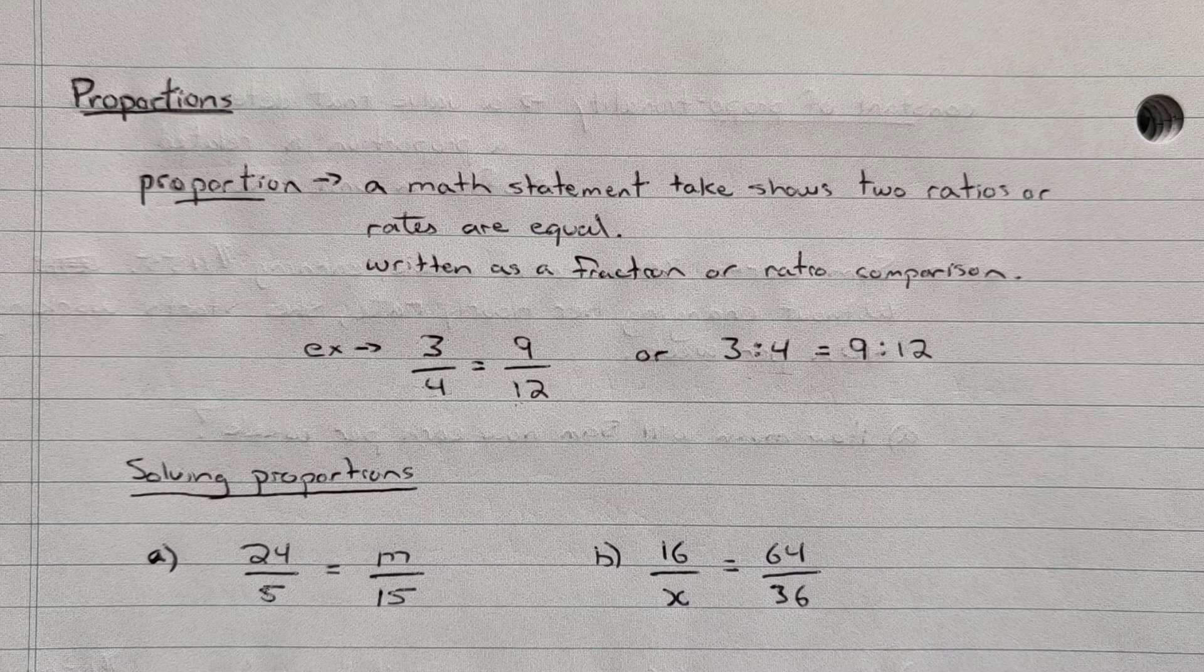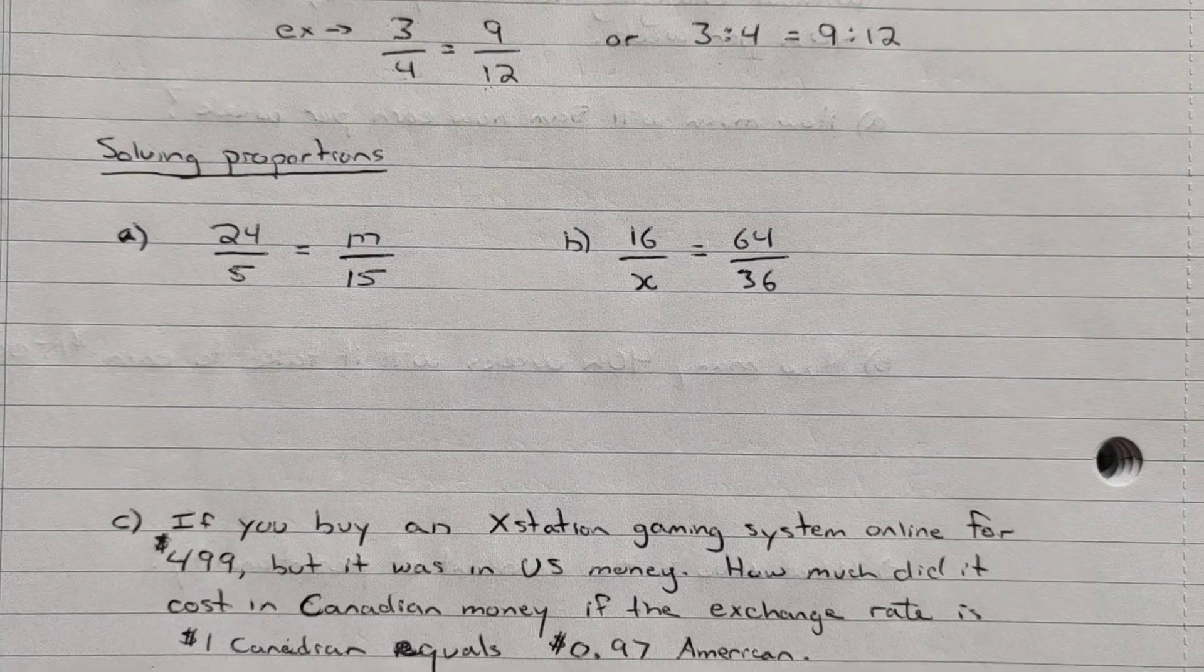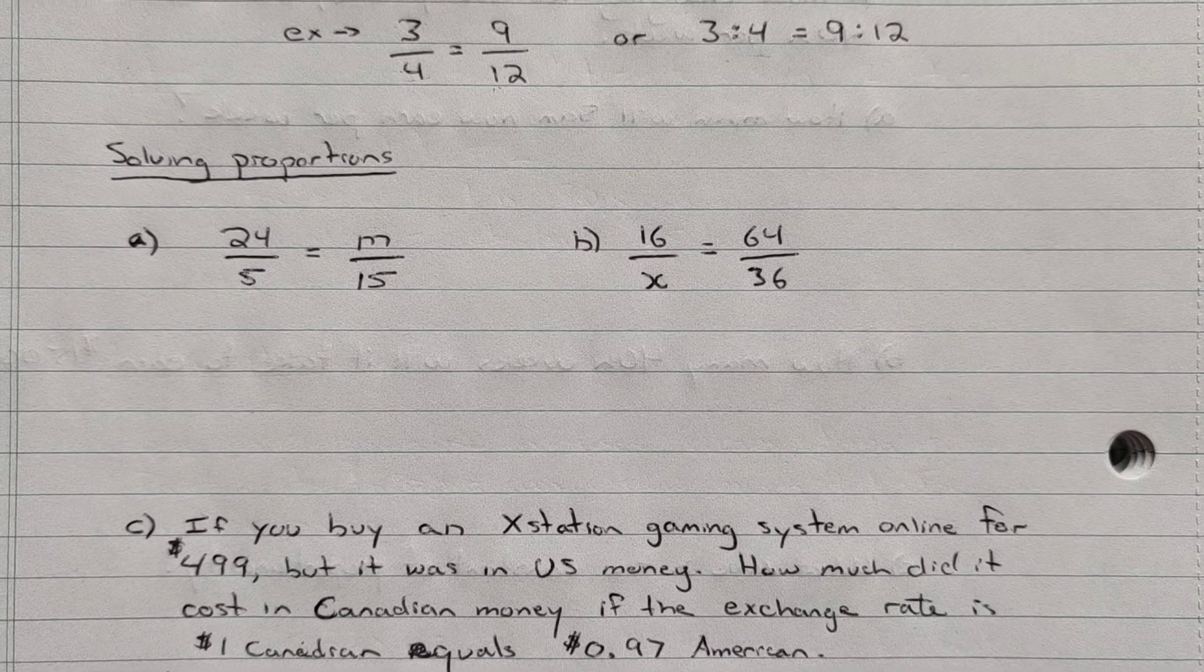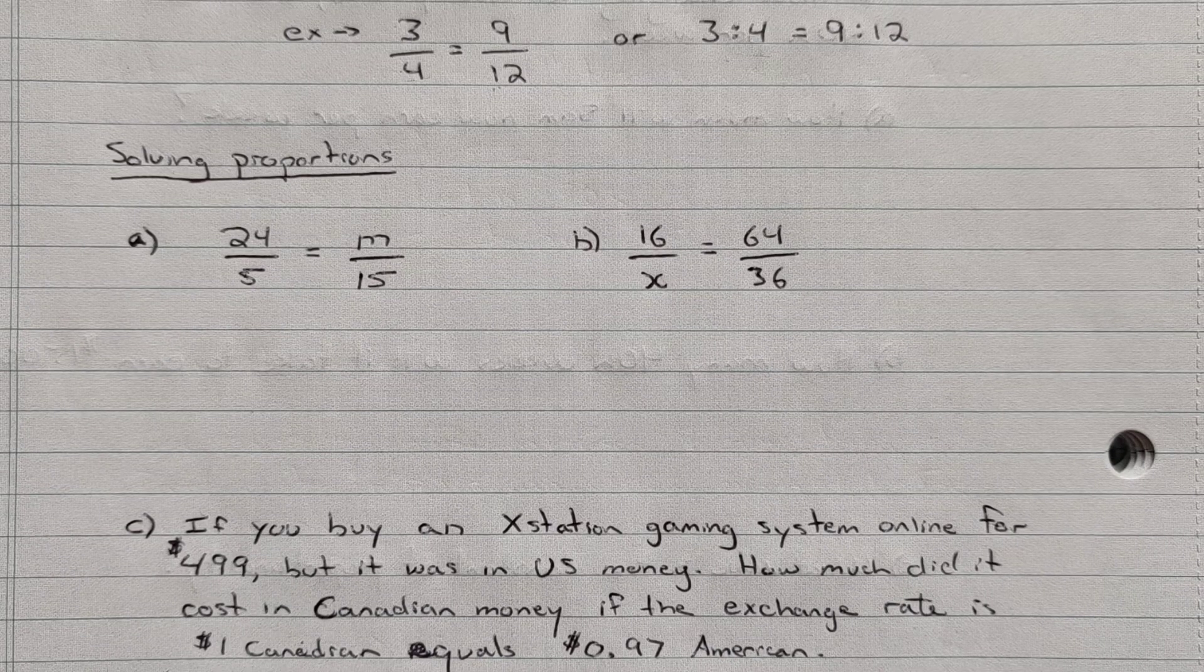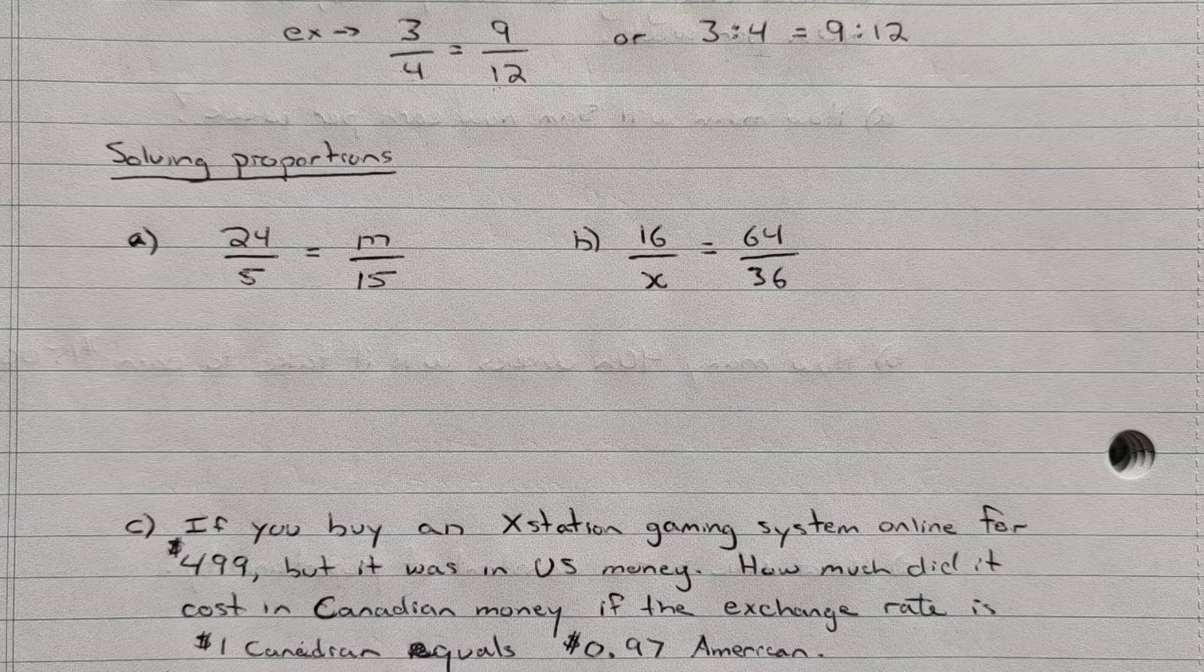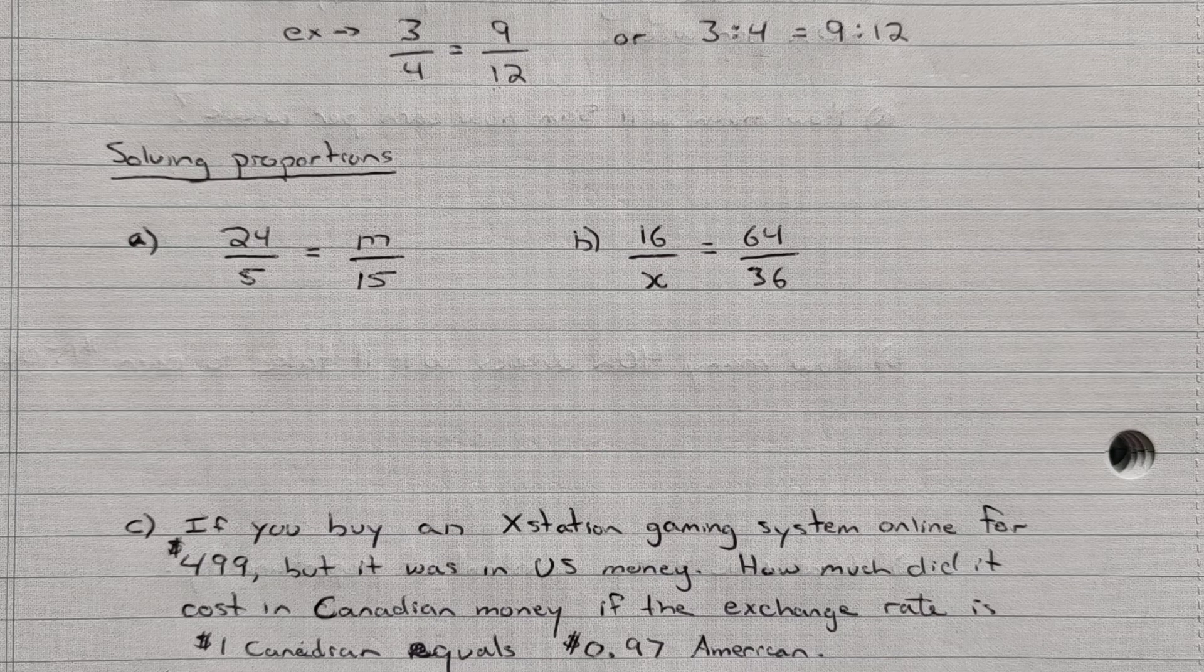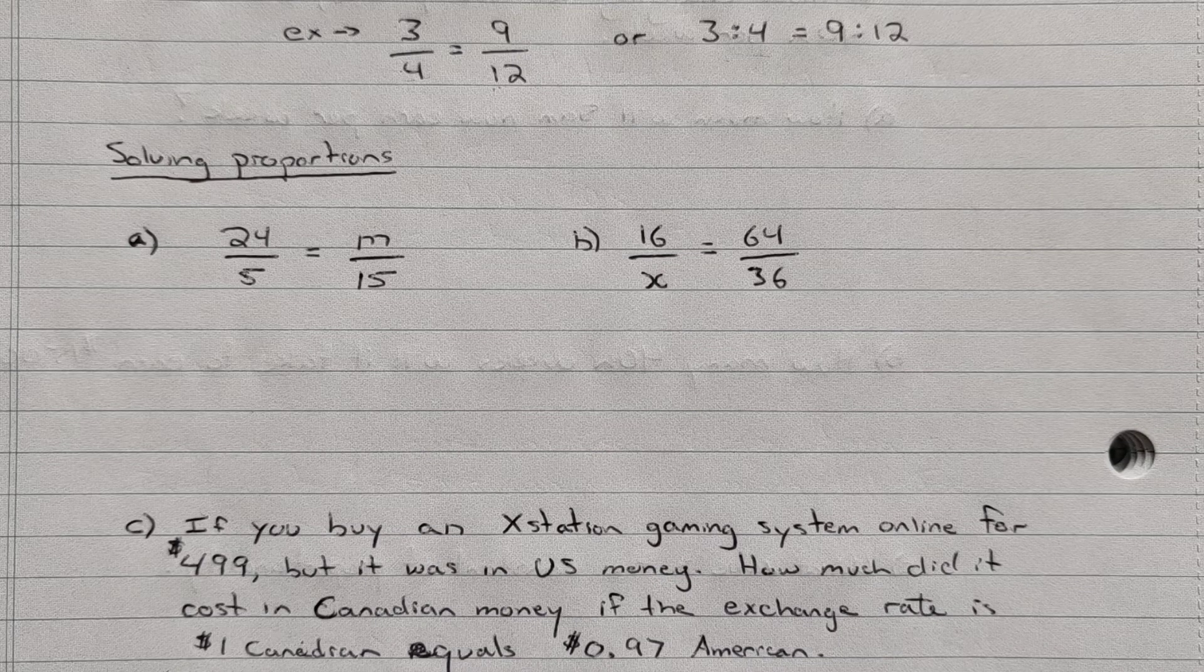So if you take a look here there's two ways of approaching these. I'll show you both, and then you pick the method that you think is most effective for you. If you take a look at the first one, in A we have 24 over 5 equals M over 15. So we want to find out what M is. We want to solve this proportion.